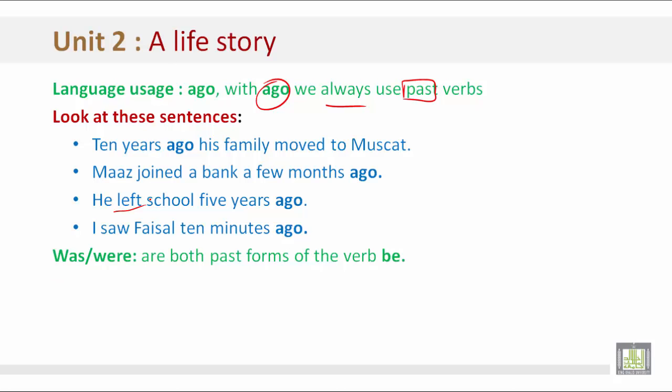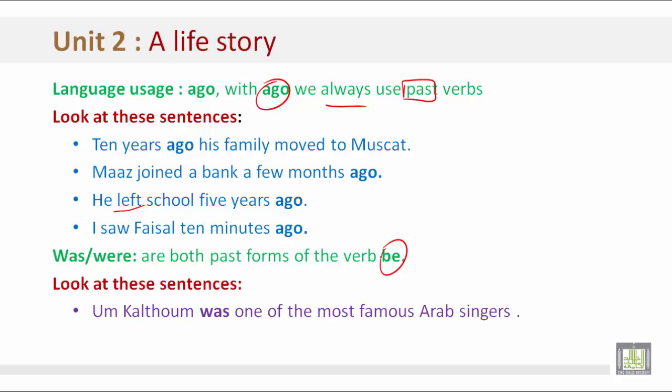Was and were are both past forms of the verb 'be'. Look at these sentences: 'Um Kalthum was one of the most famous Arab singers.' 'Her family were poor farmers.' Remember: 'was' and 'were' are both past forms of the verb 'be'.